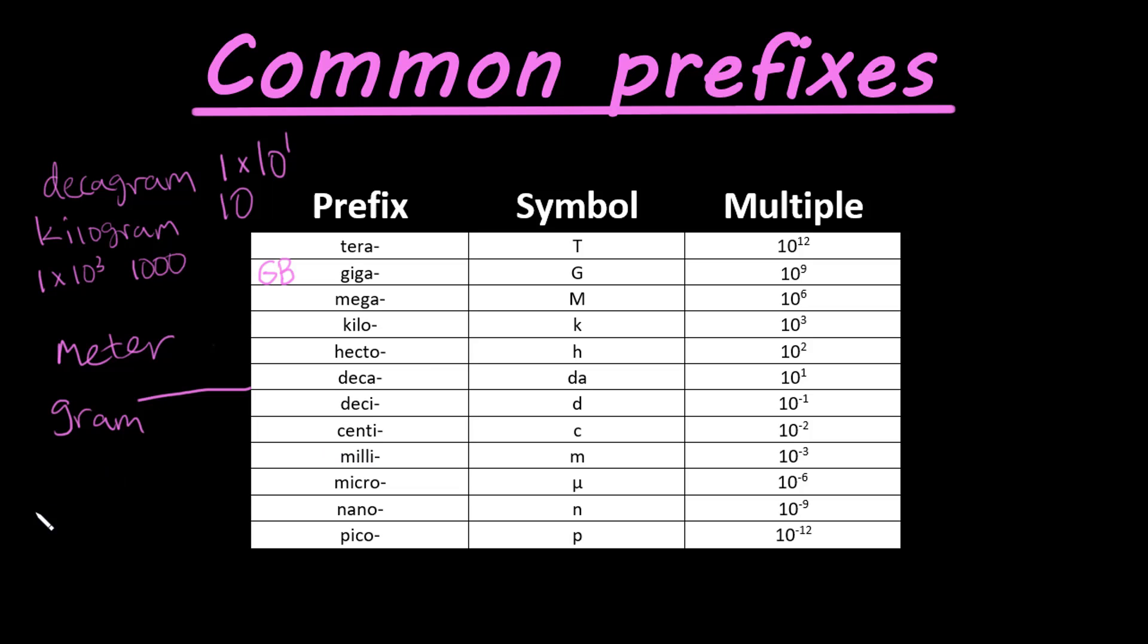Centi, so let's say like a centimeter, CM for centimeter. The multiple is 10 to the negative second power. So 1 times 10 to the negative second, we take our 1.0, move our decimal back two places, 0.01. So 1 centimeter is going to be equal to 0.01 meters. And that makes sense.